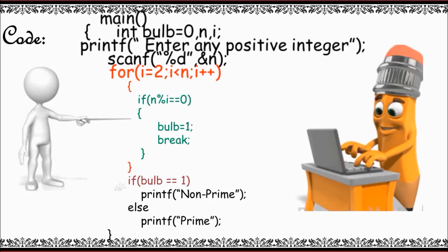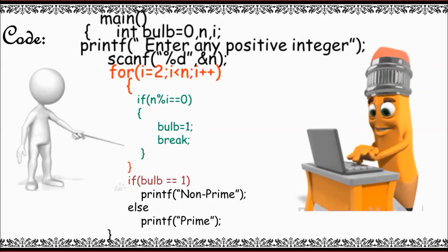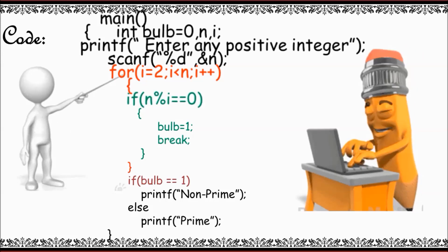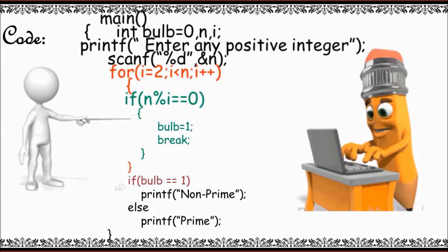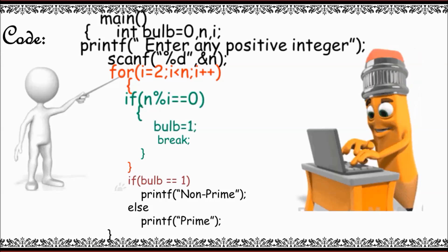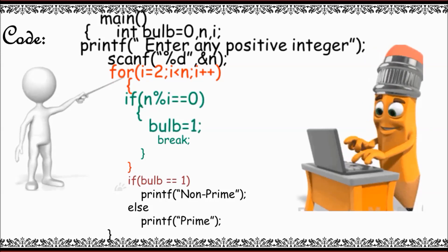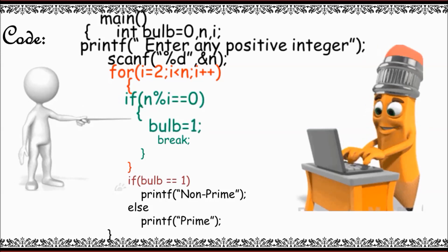If at all any remainder is 0, then immediately what I'll be doing is I'll be changing the state of the bulb to 1, then applying a break statement and coming out of the loop.